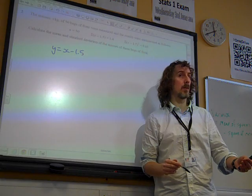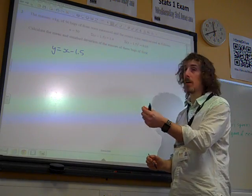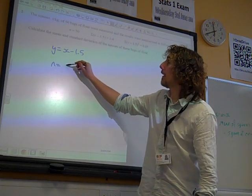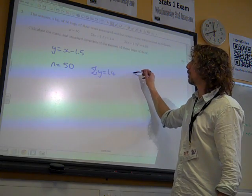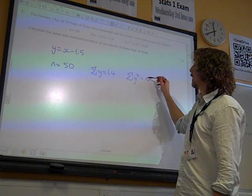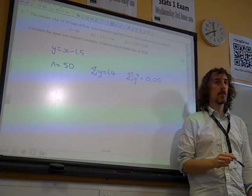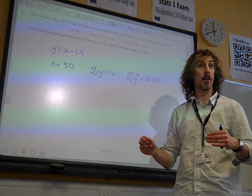So y is what you get if you subtract 1.5 kilograms from every single mass of every bag of flour, all of the 50. So now we've got n is 50, we've got sigma y is 1.4, and sigma y squared is 0.05. And we're going to find the mean and standard deviation of y, and then we're going to convert it back into x.